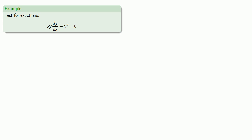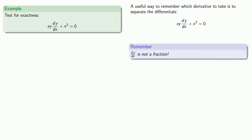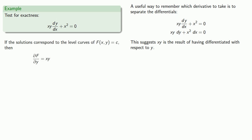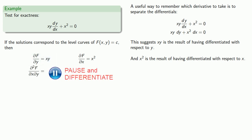So let's test for exactness. A useful way to remember which derivative to take is to separate the differentials. Note that dy/dx is not a fraction, although we do treat it like one. Treating it like a fraction, we separate our differentials to get xy dy plus x squared dx equals zero. This suggests that xy is the result of differentiating with respect to y, so our partial with respect to y is xy. Likewise, x squared appears to have come from differentiating with respect to x, so our partial of f with respect to x is x squared. Now we find the mixed partials — we've already differentiated with respect to y, so we differentiate with respect to x, and that gives us y.